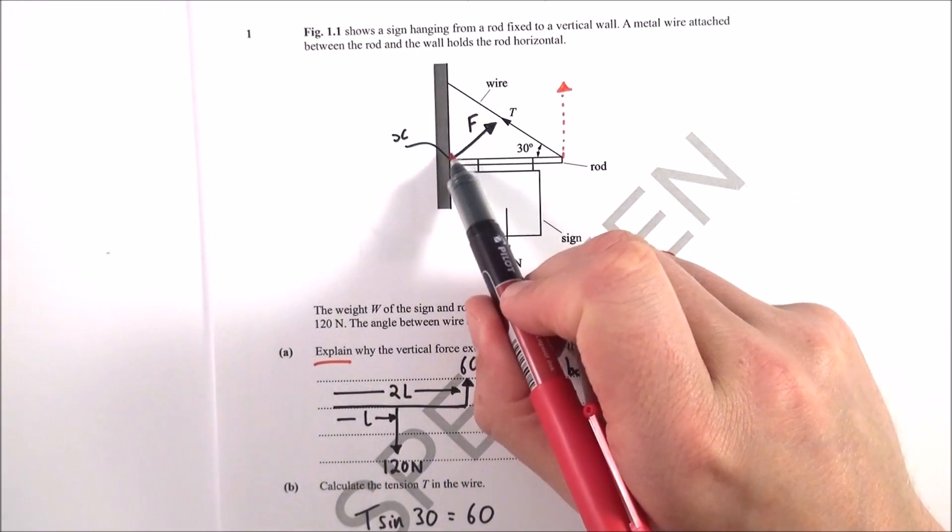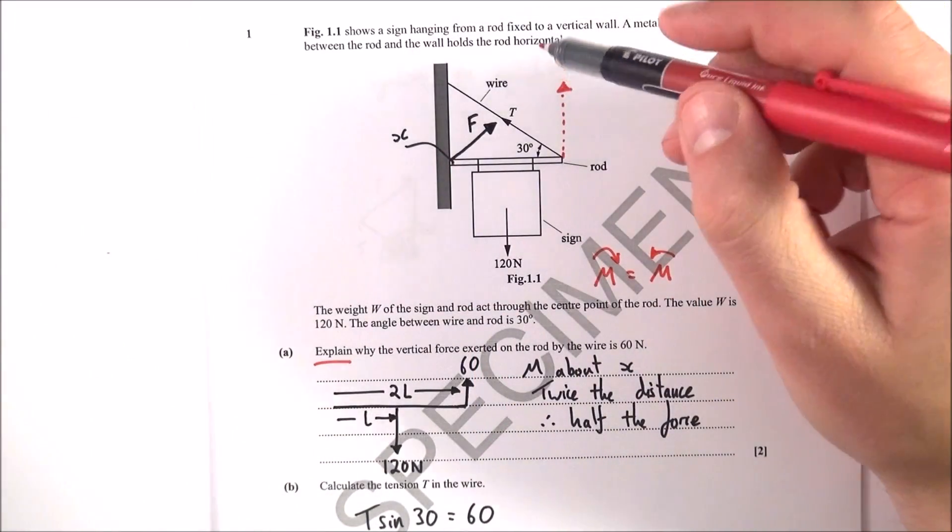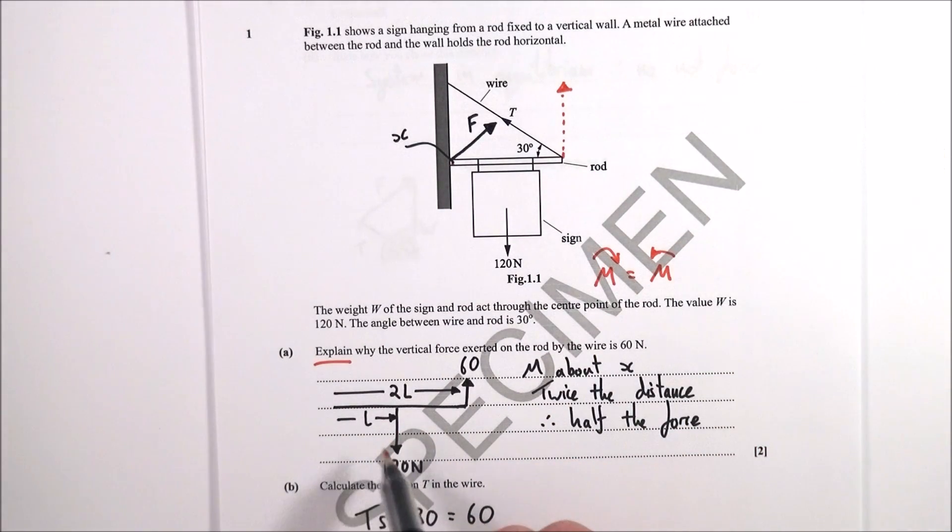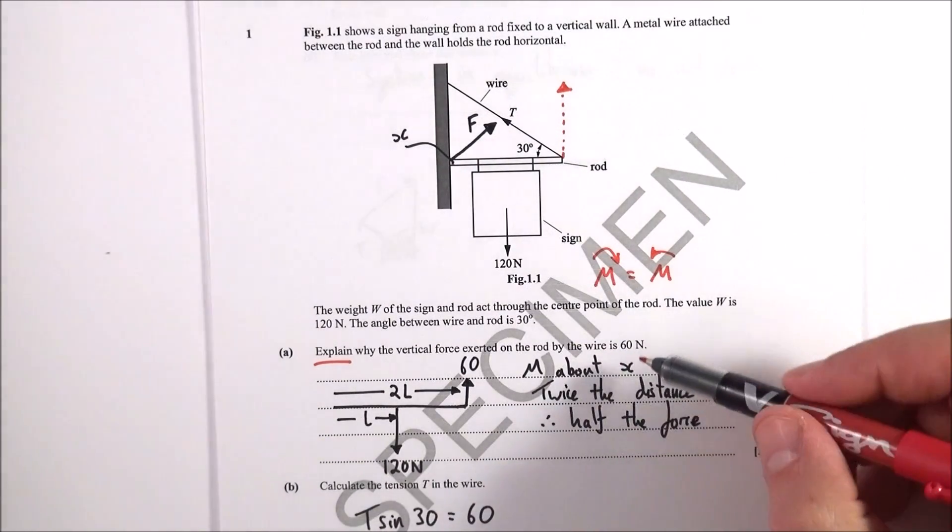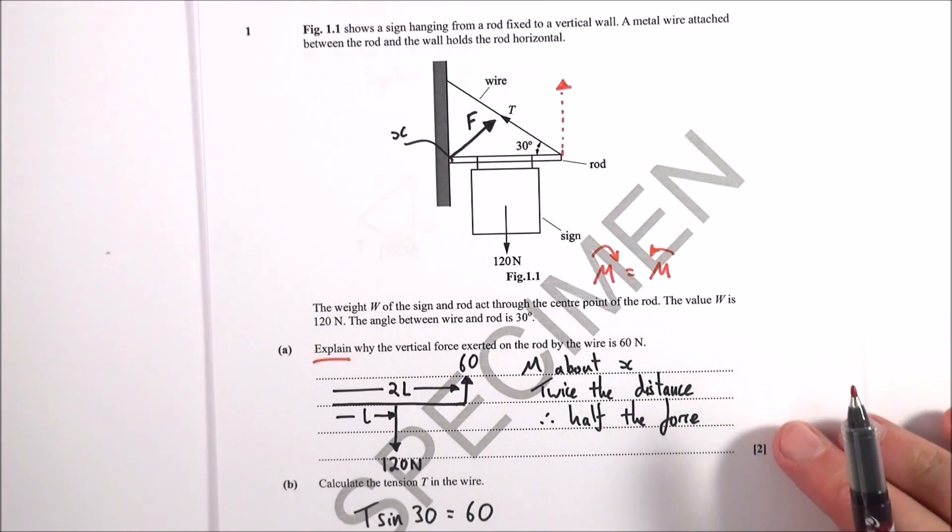So let's take moments about this point which I've just labelled x. The clockwise moments are equal to the anti-clockwise moments and that's why it's not rotating. So the clockwise moments in this case would be 120 times L and therefore the anti-clockwise moments must be equal, which if they're at twice the distance the force must be half as much in that vertical direction. So moments about x you've got twice the distance and therefore half the force.